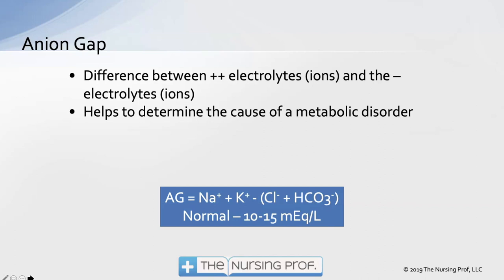Another measure is the anion gap — the difference between the positive electrolytes and the negative electrolytes in the body. The major positive electrolytes are sodium and potassium; the major negative electrolytes are chloride and bicarb. The reason we look at an anion gap is to help determine the cause of a metabolic disorder. It's very clear what causes a respiratory disorder — it's the lung. But a metabolic disorder could be from diarrhea, renal failure, or acidosis from inadequate perfusion.